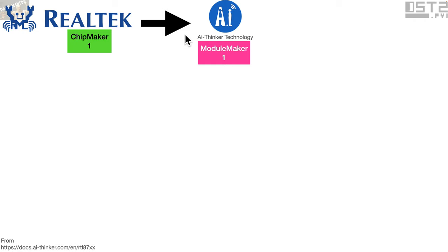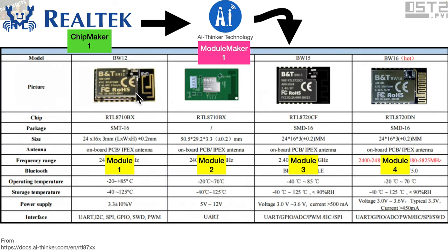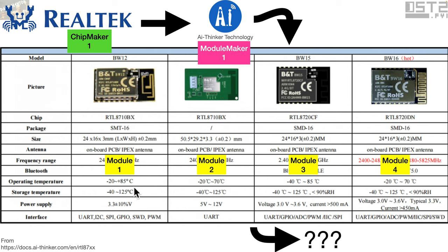Concretely, a chip maker might be Realtek. Realtek sells their chips to a company like AI Thinker Technology — a module maker. AI Thinker Technology then sells multiple modules: for example, models BW12, BW15, BW16, each using a Realtek chip but as different modules. AI Thinker could use chips from multiple makers, but ultimately they just sell a bunch of modules, and we don't know exactly what products those modules go into. But if I see that a device is specifically module BW12 from AI Thinker, then I know it's a Realtek chip.